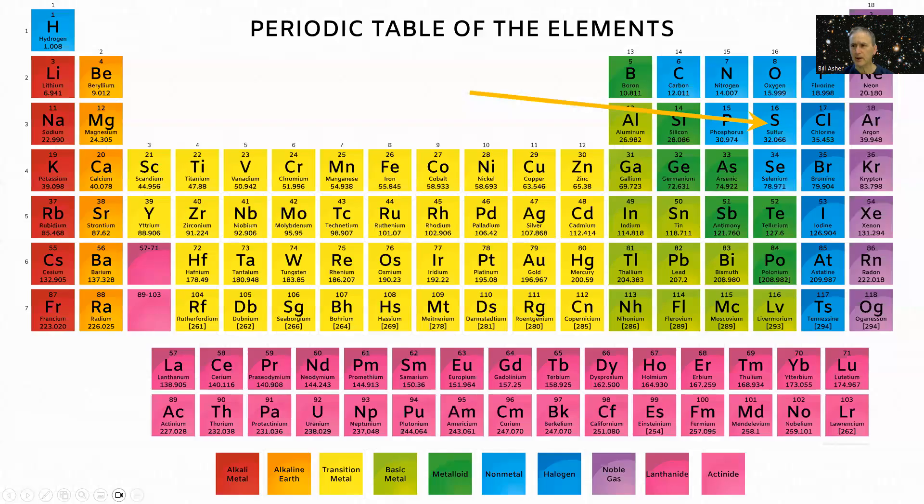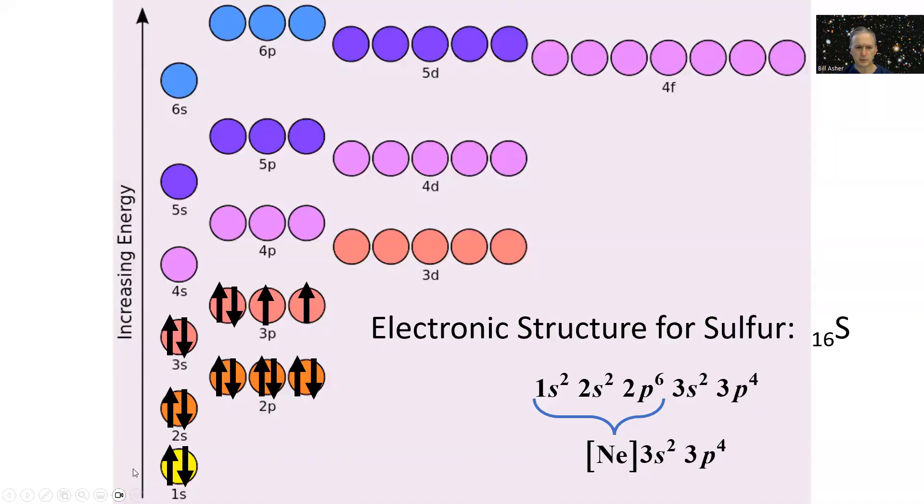...are the same electronic structure as neon, which has 10 electrons. So we would write that as neon in square brackets, 3s² 3p⁴. Sulfur would have six valence electrons, 2 plus 4.